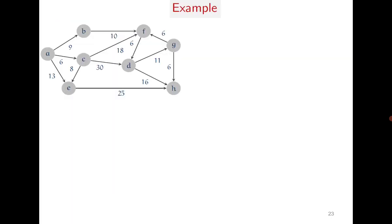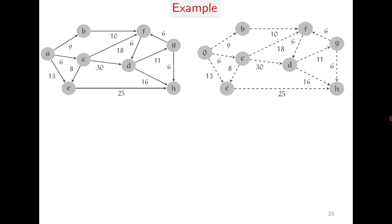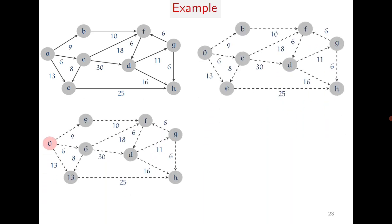Now consider one more example. We start with vertex a and find the shortest path from a to all other vertices. Initially the distance is 0, and from a, three vertices are reachable with distances 9, 6, and 13.